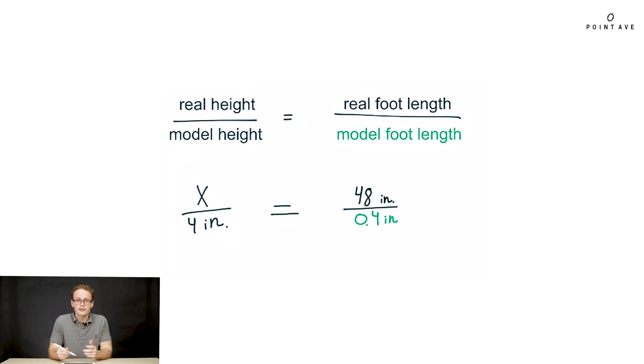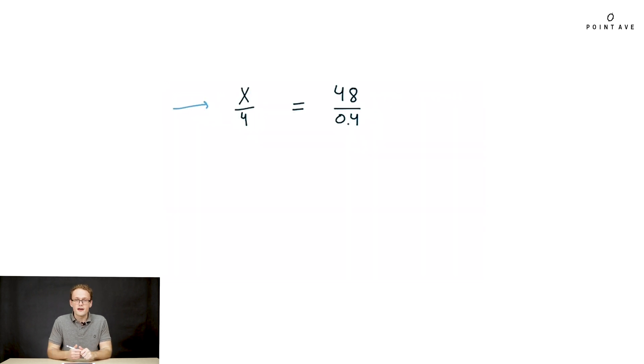And then lastly the model foot length we're given is 0.4 inches. So we plug it all in one by one, putting it together we have our proportion finally to solve: x over 4 equals 48 over 0.4.